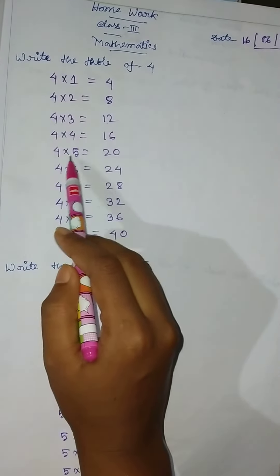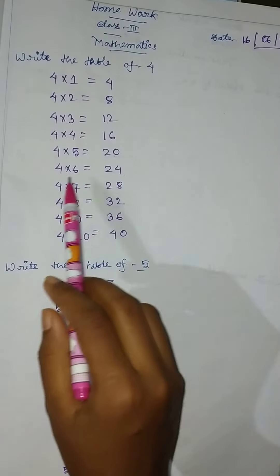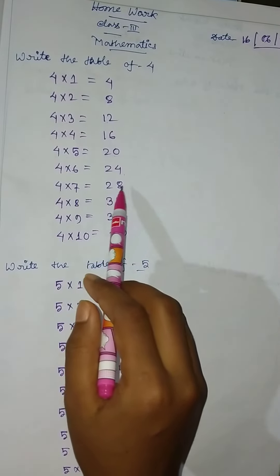4 into 4 equal to 16, 4 into 5 equal to 20, 4 into 6 equal to 24, 4 into 7 equal to 28.